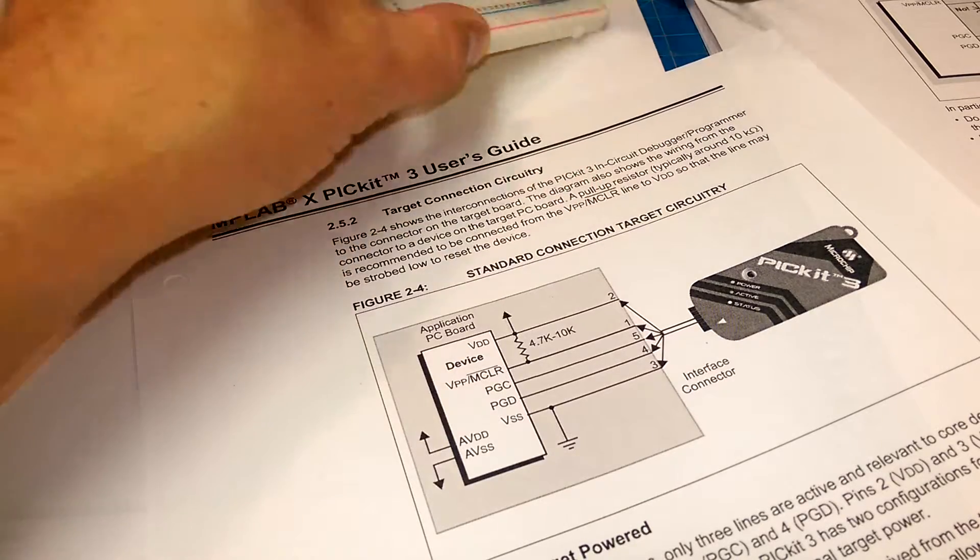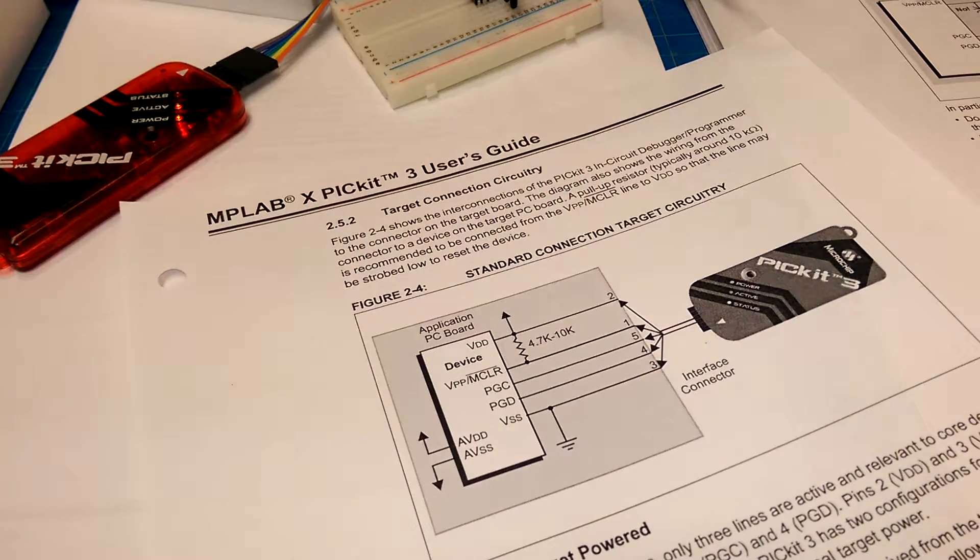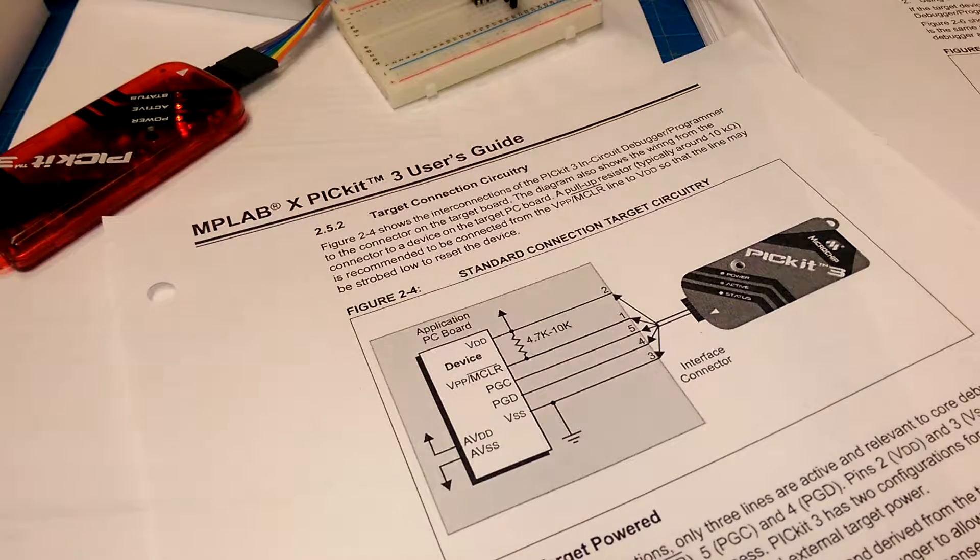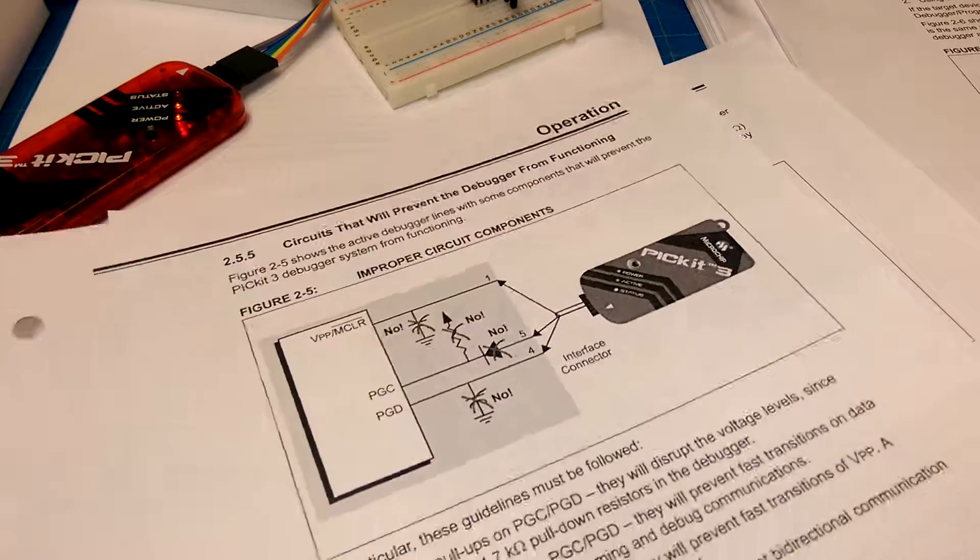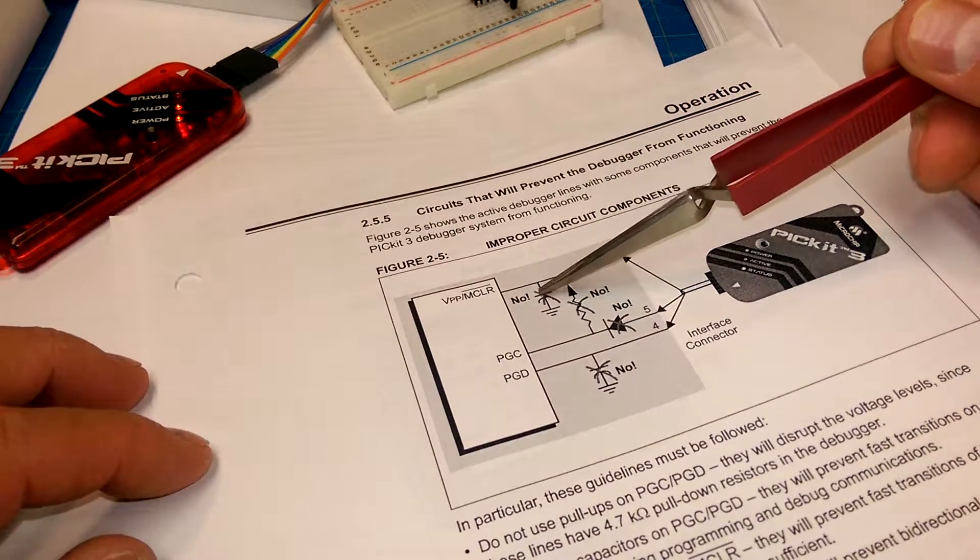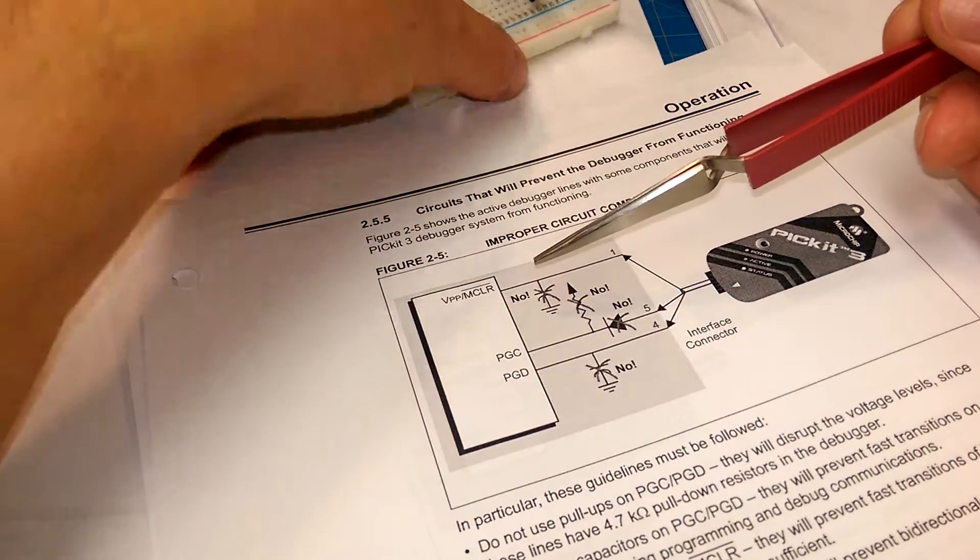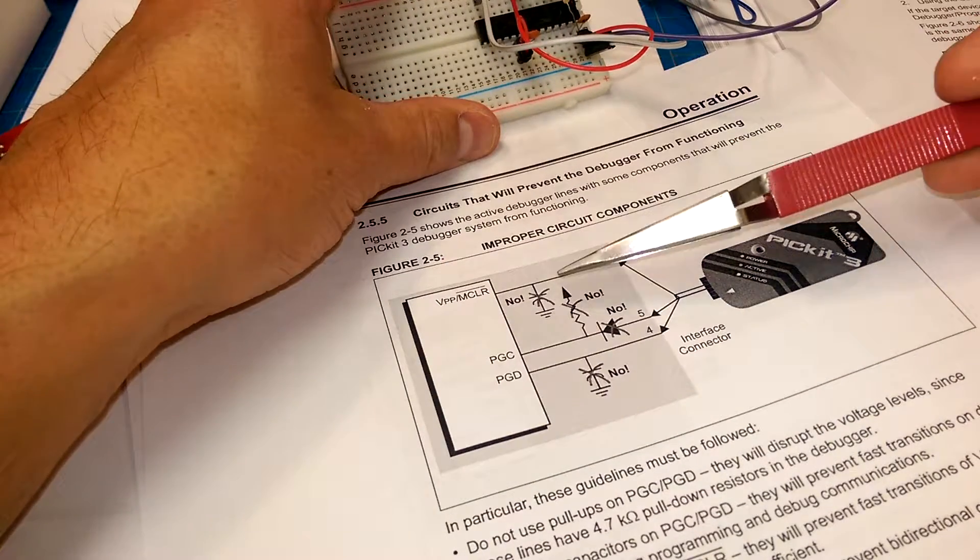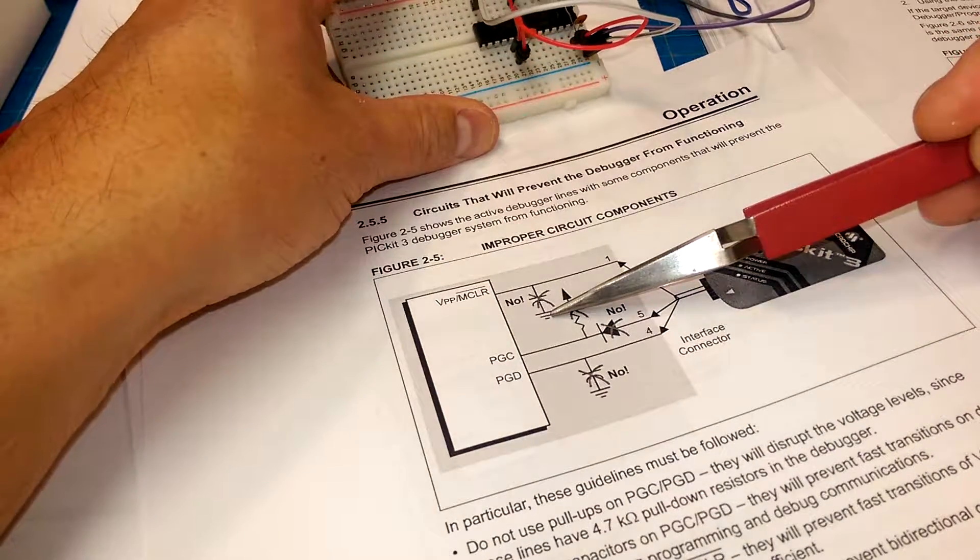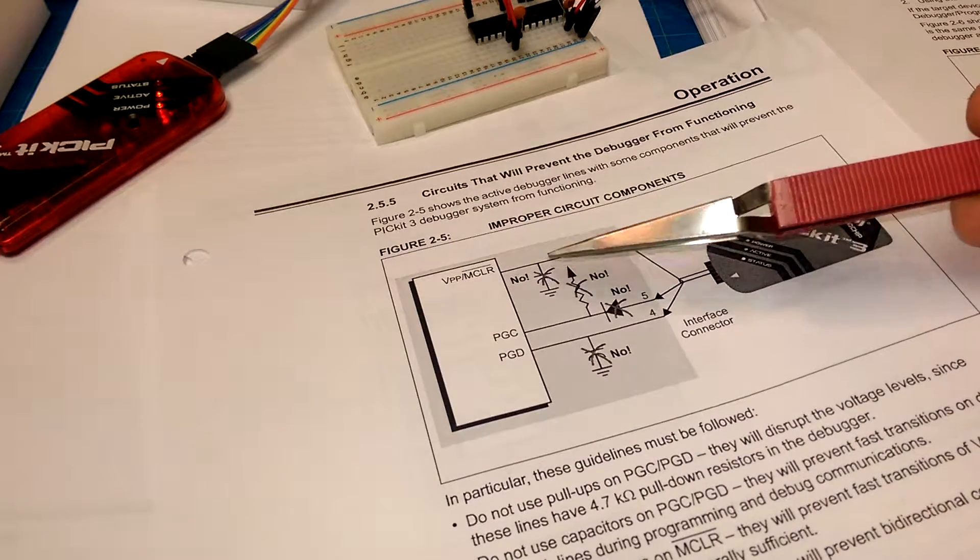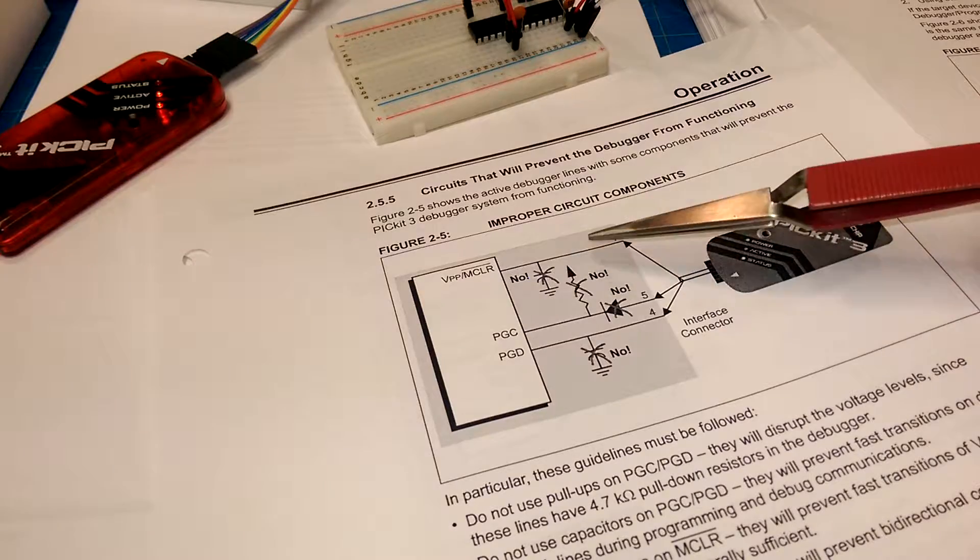Now, they also tell you in the data sheets to not put a capacitor across your reset pin and ground. But that might be errata. I haven't checked it out.